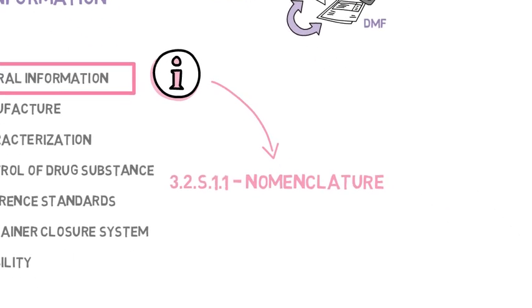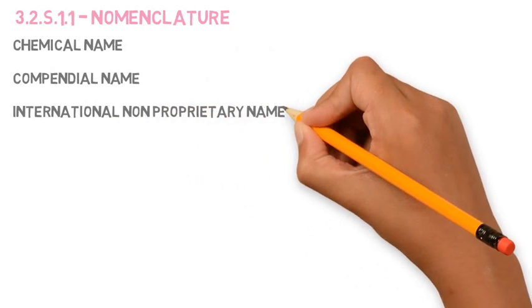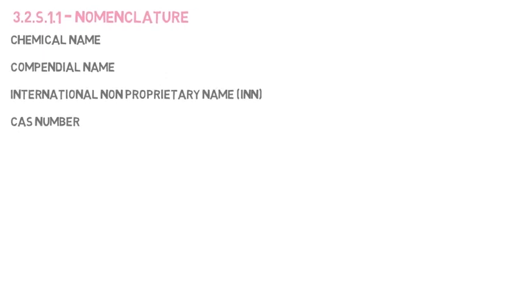Here we will see different relevant names that can help us identify the API. The chemical name, compendial name, international non-proprietary name, CAS number.